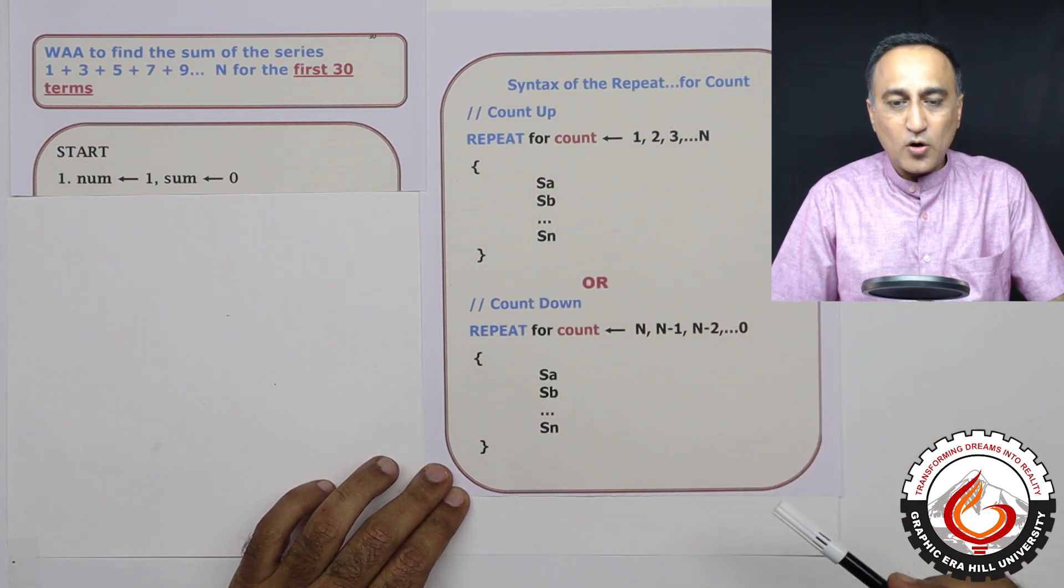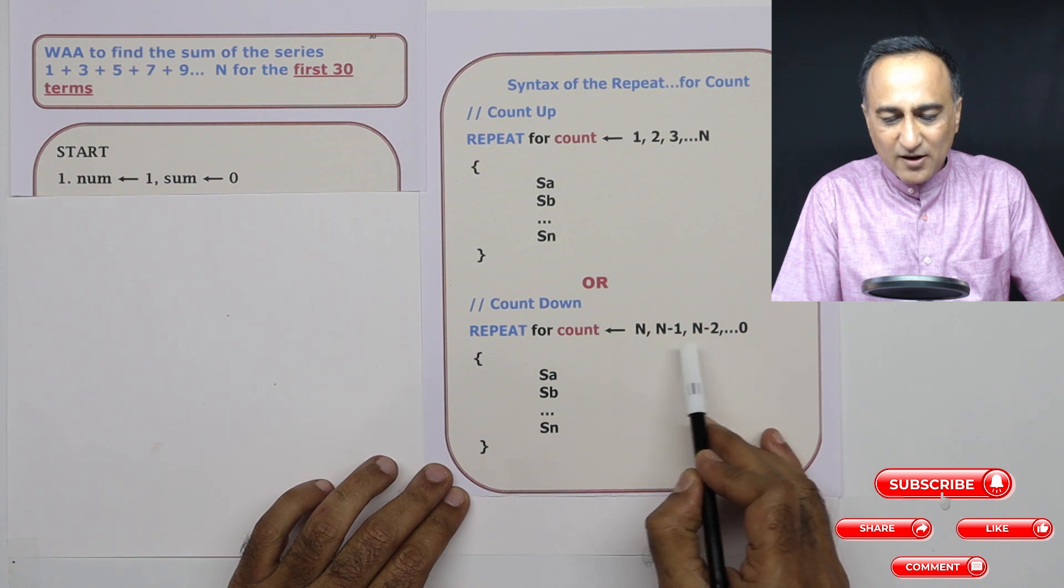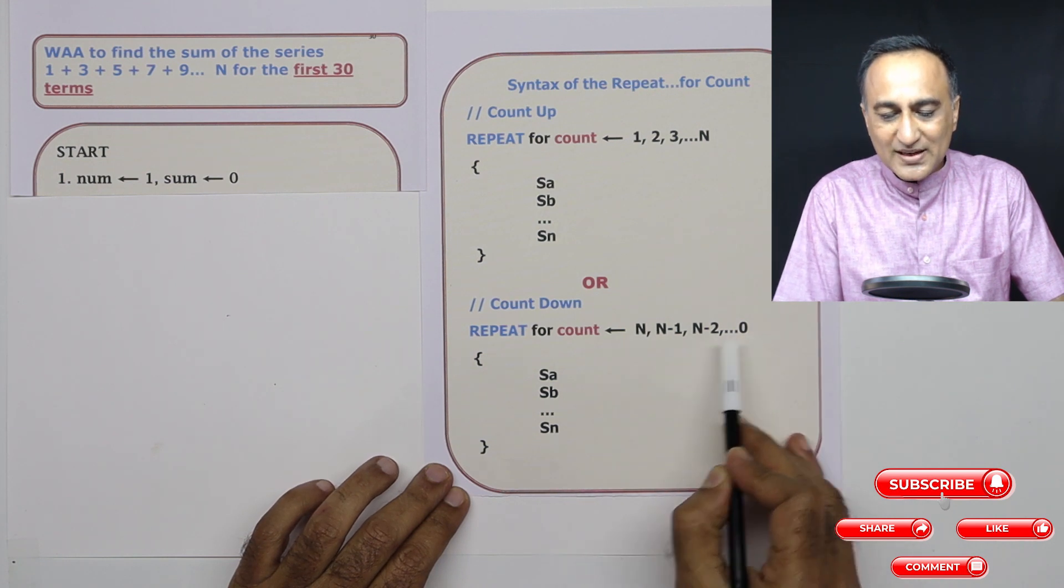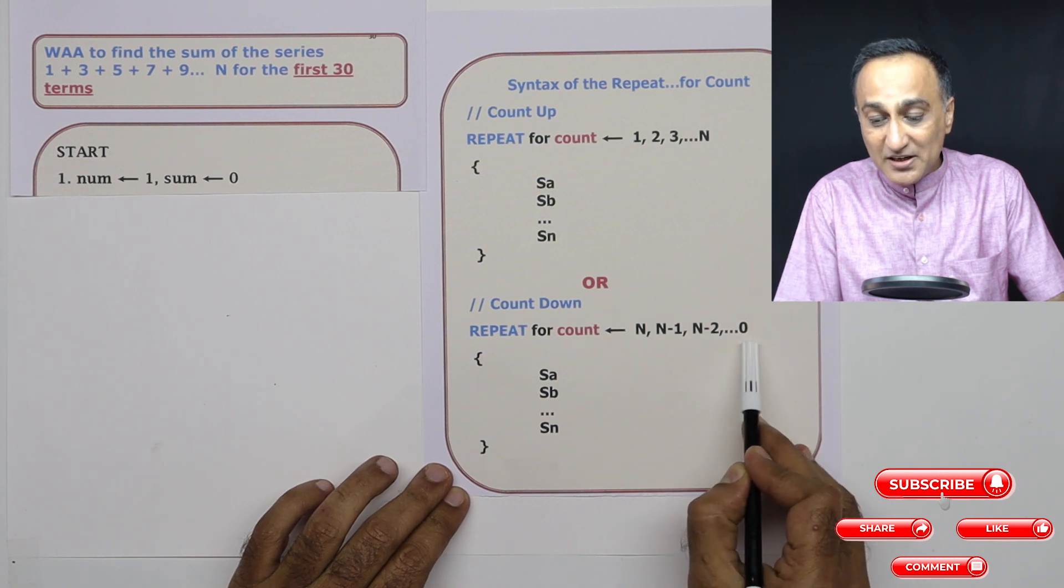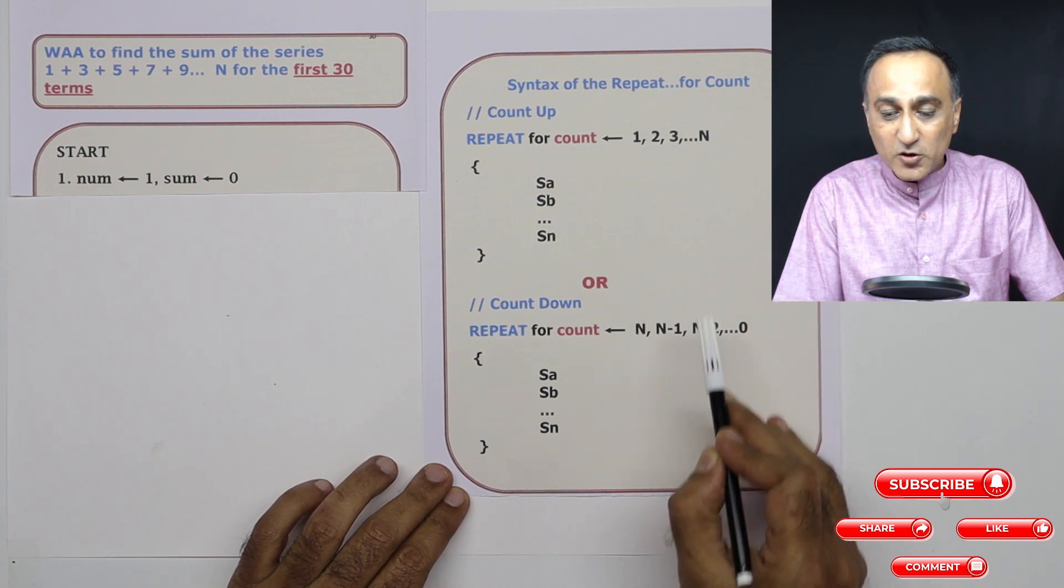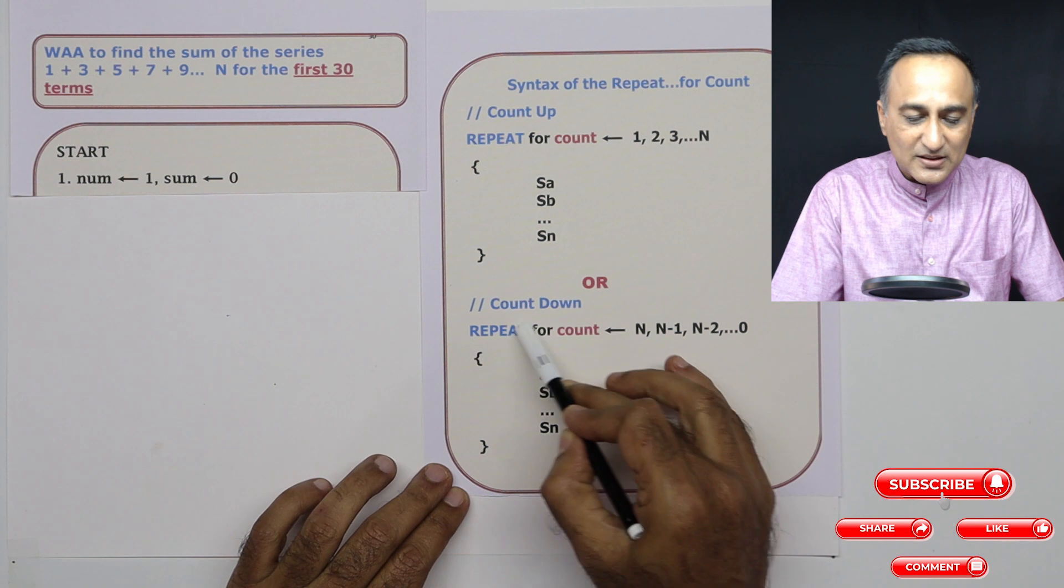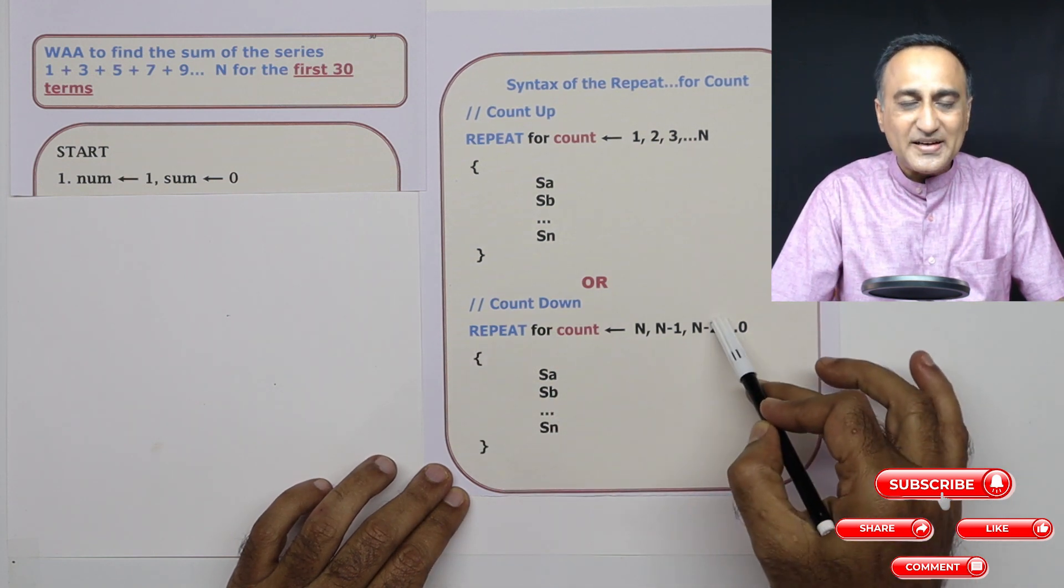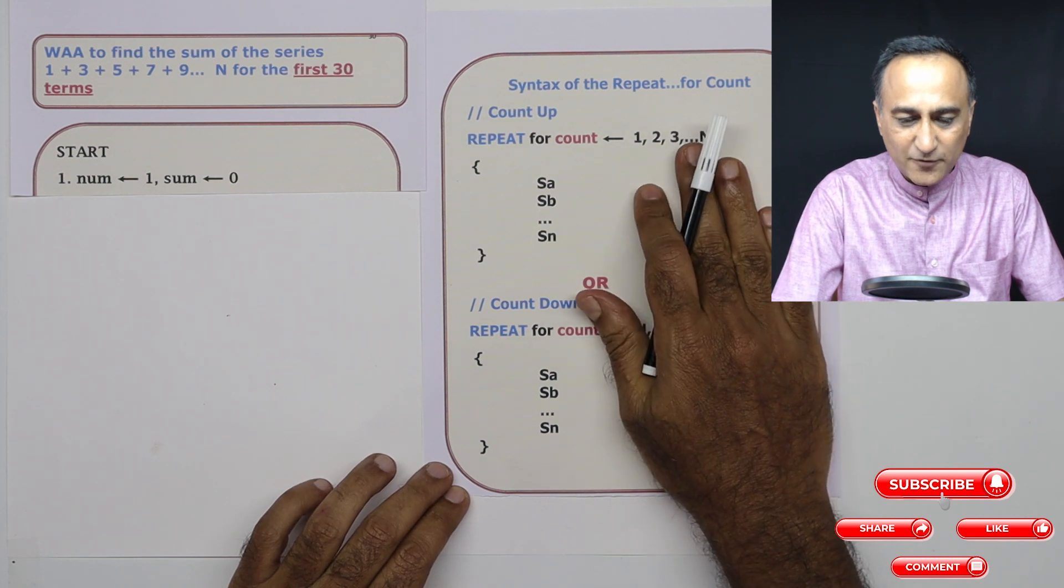Now you can have a countdown also. So in the countdown, what I am doing is I am starting from n all the way till zero. Since I'm starting from n, n minus one, n minus two and I'm reaching zero, it will execute one time more than this one because I want to execute it till it is zero. Suppose n is five, this block is going to execute or repeat six number of times.